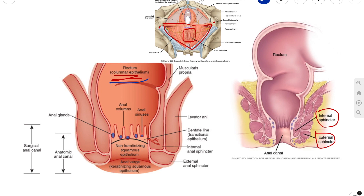These longitudinal folds are called anal columns. You can see in this diagram — these are your anal columns. They are joined together at their inferior ends.